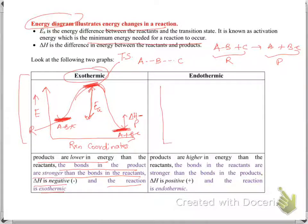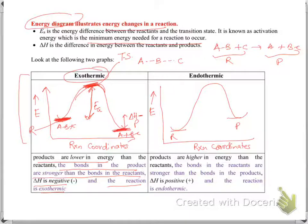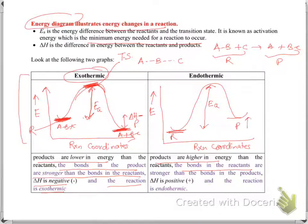For the endothermic reaction graph, the products are higher in energy and the reactants are lower in energy. The activation energy Ea is the difference between the transition state and the reactants, and the energy requirement is greater for endothermic reactions than exothermic reactions. In endothermic reactions, products are higher in energy than reactants, meaning the bonds in the reactants are stronger — we are starting with stronger bonds and making weaker bonds. Delta H is positive, and the reaction is endothermic.